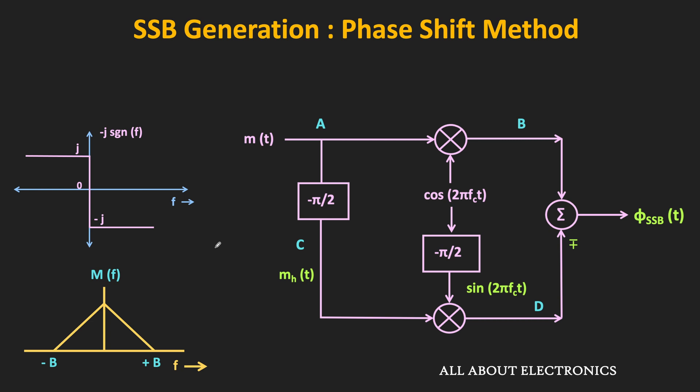For signals with no DC or very low frequency component, since there is no need to worry about the abrupt phase change, even a practical Hilbert phase shifter can perform the Hilbert transform. This means the phase shift method works for signals with a DC null or very little low frequency component. The second limitation is that, although it is possible to design a circuit providing a –π/2 phase shift for a wideband signal, designing such a wideband phase shifter is very difficult, increasing the complexity of the modulator.